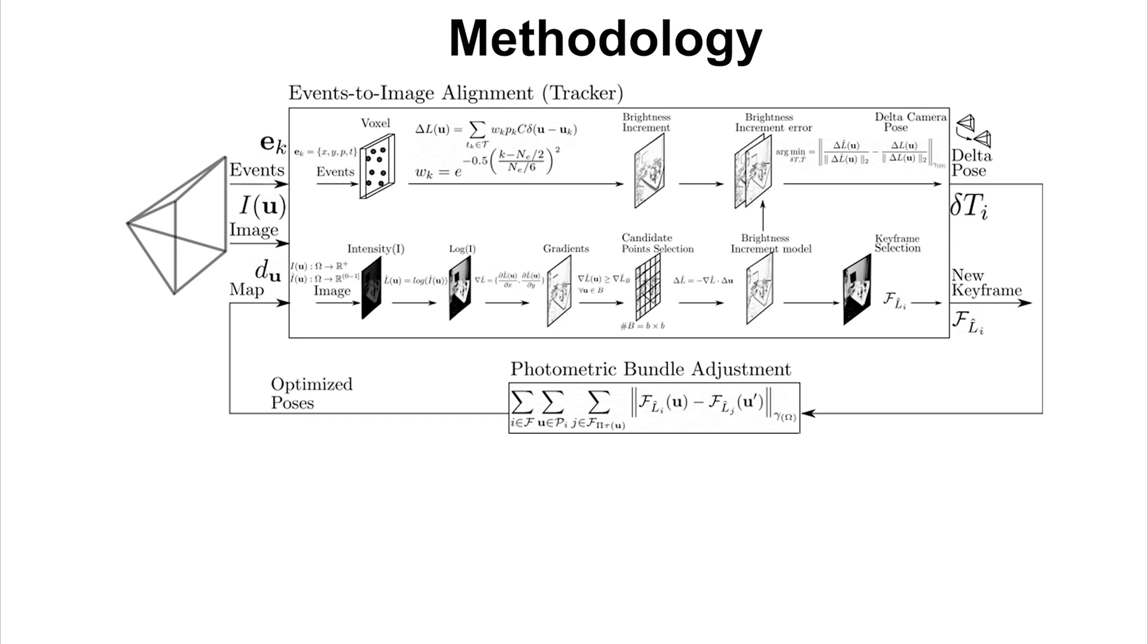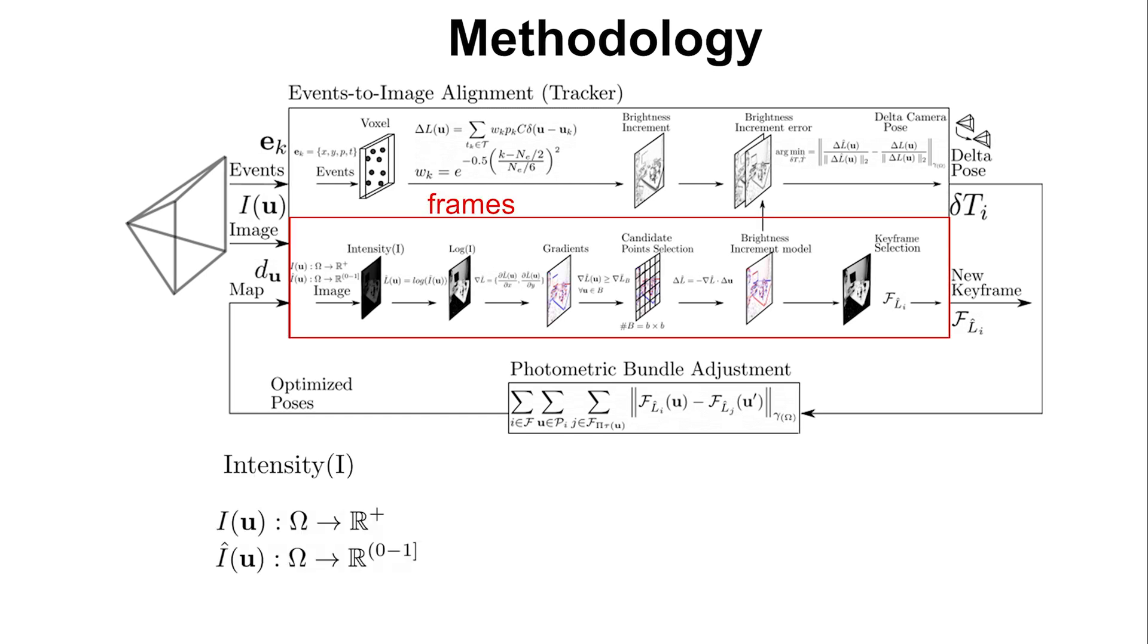The following diagram summarizes the methodology. We assume a camera, shown here on the left, that provides synchronized events and frames on a common image plane. The frames are processed by using the grayscale values in the logarithm of the intensity, L hat. Afterward, the gradient in x and y direction is computed using the Sobel operator, and a set of sparse pixels is selected based on the gradient magnitude.